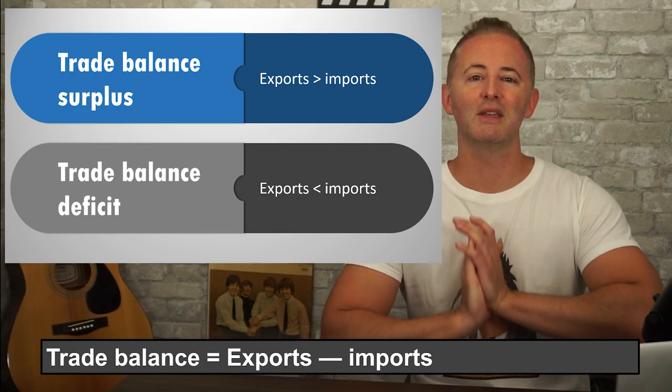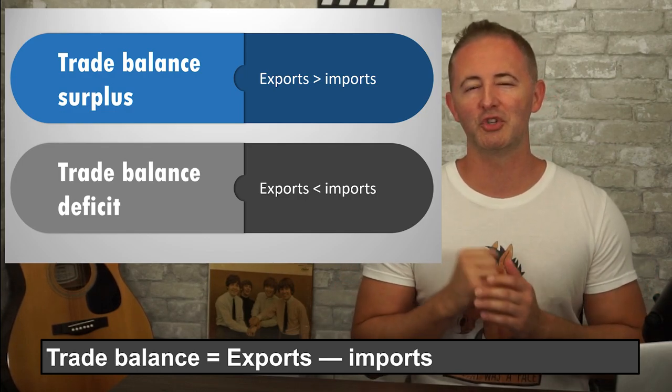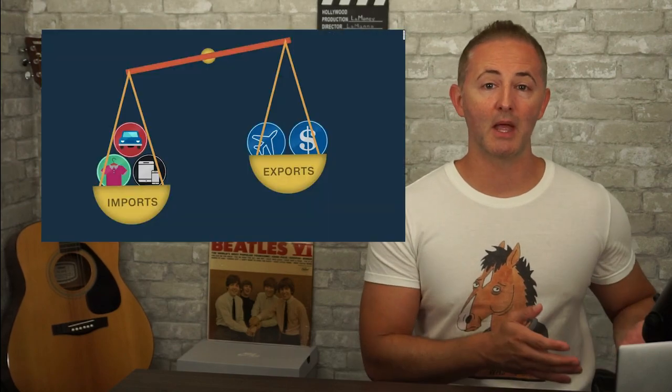I'm going to get on my soapbox for a minute because I believe there is rampant misunderstanding of some of these terms. I actually hate the concept of measuring bilateral trade balances. The U.S. has trade surpluses with some countries and trade deficits with others. The news media loves to report on trade balances, and politicians love to talk about it as if it matters, sometimes promising to fix it as if a trade deficit is a bad thing. But a trade deficit literally just means we bought more of their stuff than they bought of ours. The fact that the trade crosses political borders is irrelevant from an economic perspective.